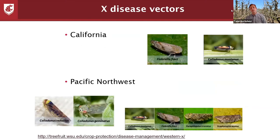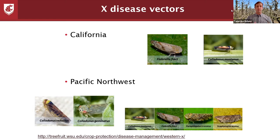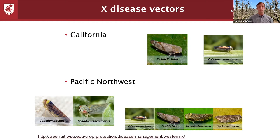In California, when they had an outbreak in the 80s, the two main leafhoppers were Fiborella florei — the Florei's leafhopper — and Cholodonus montanus, the mountain leafhopper. In the Pacific Northwest, we have those, but they're not that abundant. In California, Florei preferred to feed on cherry trees and was mainly found when orchards were out of control and not being maintained. Montanus, more commonly found, is more of an herb specialist that feeds on ground cover and hops up into the trees from time to time.